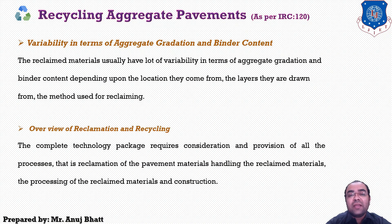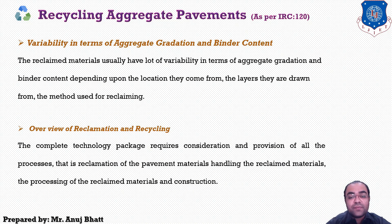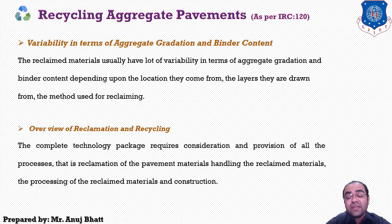The overview of reclamation and recycling: the complete technology package requires consideration and provision of all processes — that is reclamation of the pavement material, handling the reclaimed material, processing of the reclaimed material, and the construction process. There are essentially two different types of recycling technology available: in-place and in-plant. Each type has two different variants — cold and hot. Cold recycling technology has three options: foam bitumen, emulsion, and stabilization, wherein hot technology has two options: hot process and cold process.